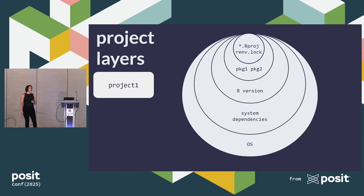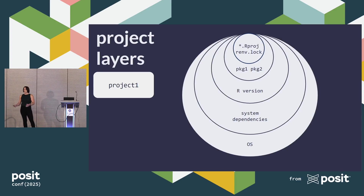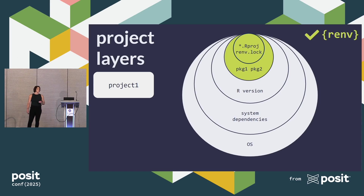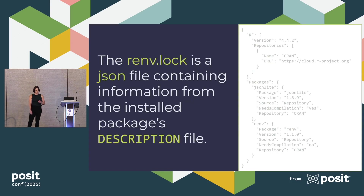When we think about any given project, they have project layers — I'll call this the project onion. In the innermost layer, we have our .rprofile and an renv block. Then we have the packages associated with the analysis, the R version, the system dependencies, and the operating system. Keep in mind where RNV operates: in those innermost layers, touching the packages.